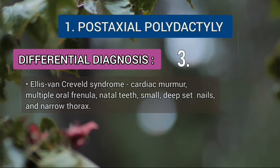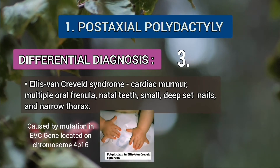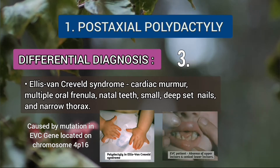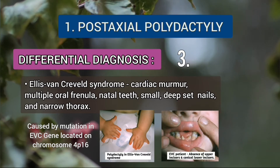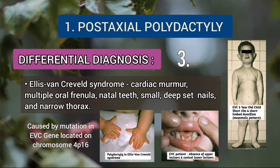The third differential is Ellis van Creveld syndrome. It is caused by a mutation in the EVC gene located on chromosome 4. It is characterized by cardiac murmur, multiple oral frenula, natal teeth, small deep-set nails, narrow thorax, and short-limb dwarfism in a mesomelic pattern.